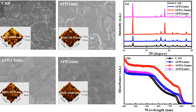Looking at the XRD data, the peaks were at the same angle, confirming all thin films were perovskite. However, in the case of the anti-solvent fumigation process for 1.5 minutes, the peak intensity was higher, showing higher crystallinity compared to other processes. In figure B, the absorbance with respect to wavelength of incoming light was also increased for the AFP sample.